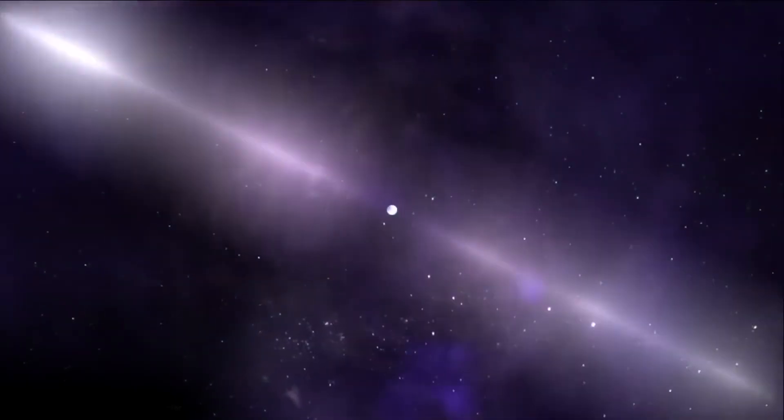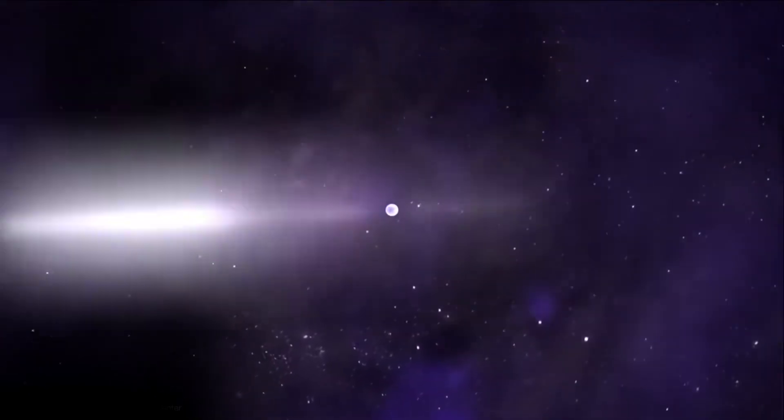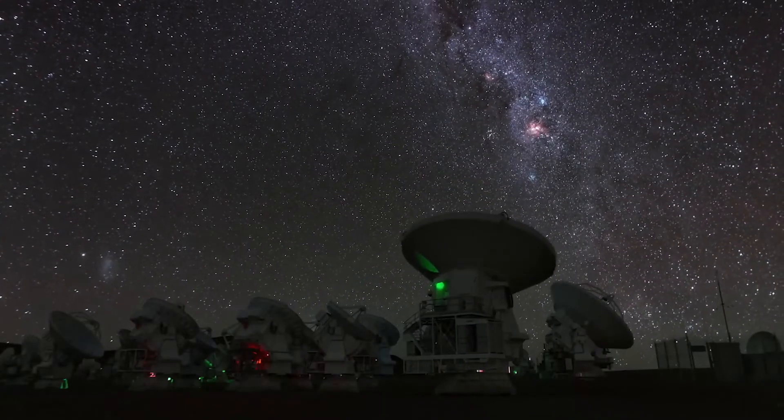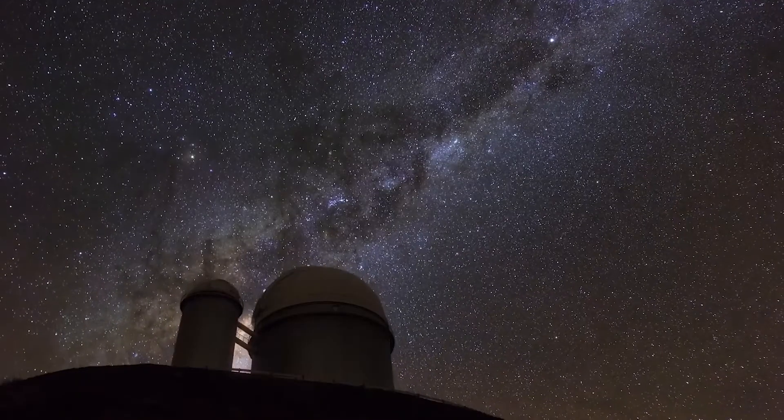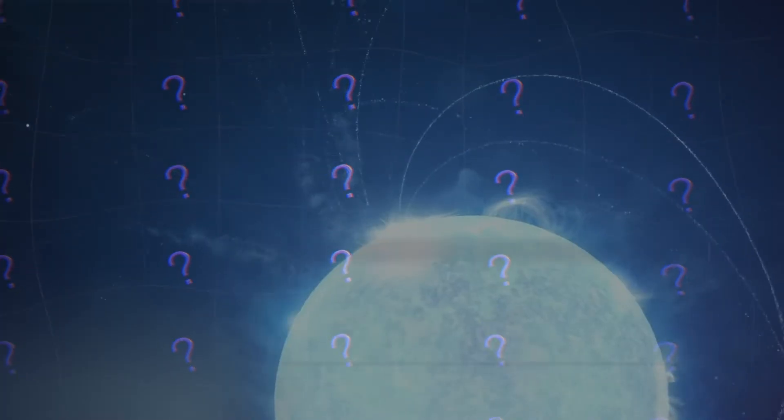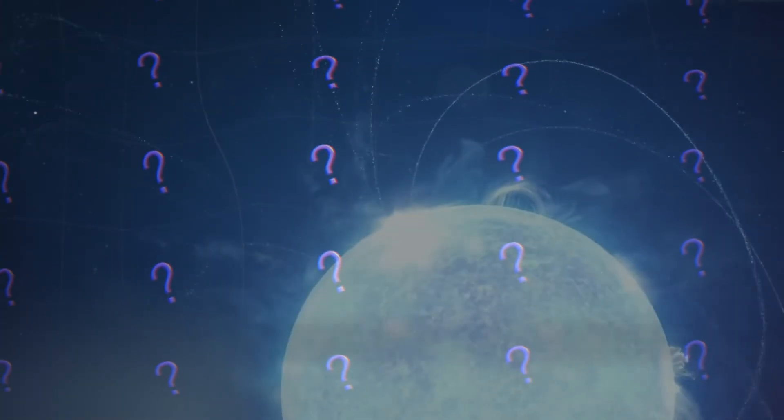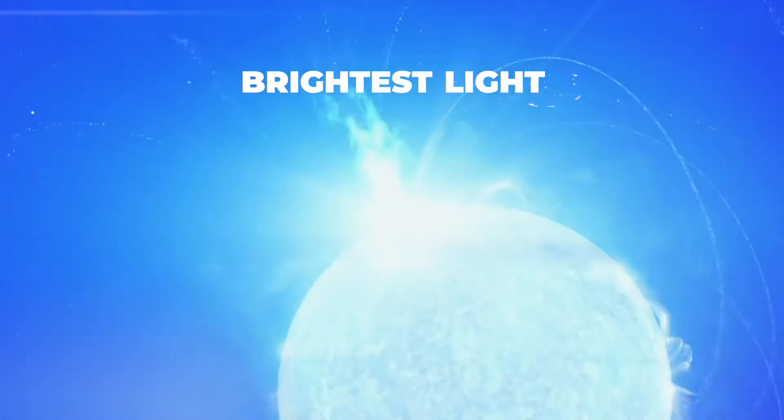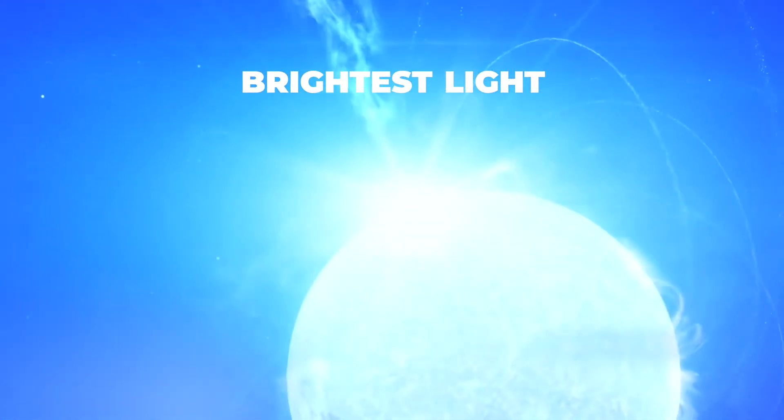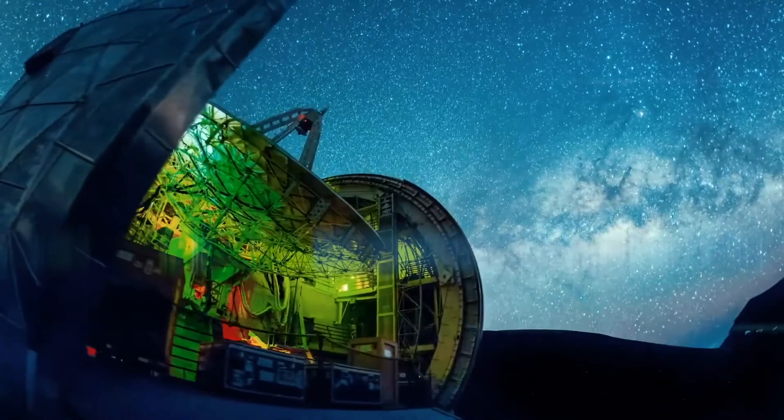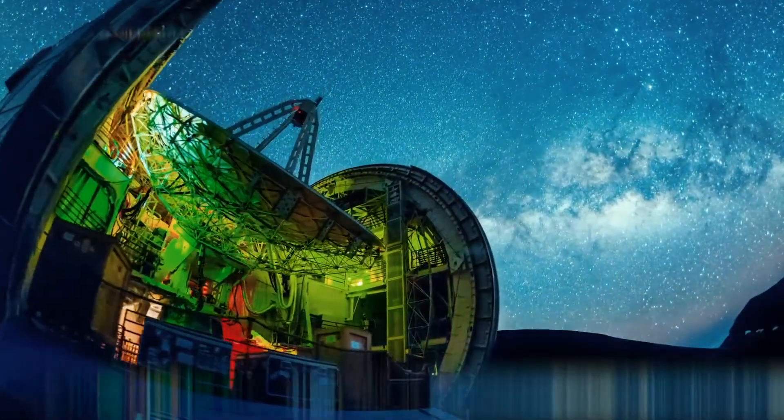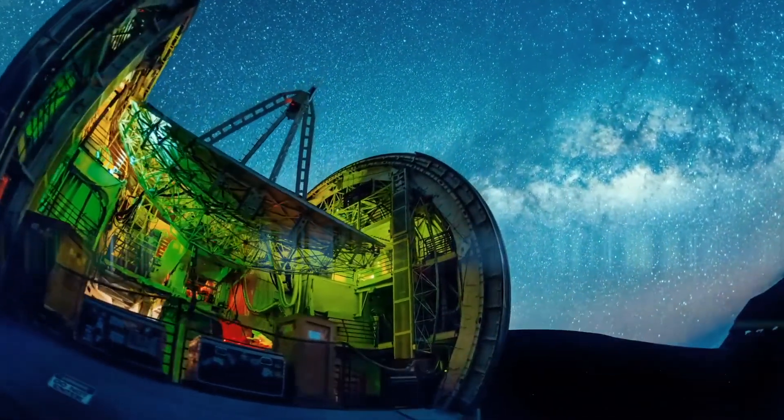Now that researchers have been able to confirm that this object is a pulsar, they can begin to study it more in depth and see what can be learned from it. What makes it rotate so slowly? What properties make it produce the brightest light seen from its kind? Finding this unique pulsar was only the first step in understanding how and why it is there.